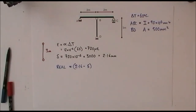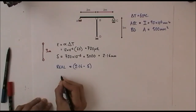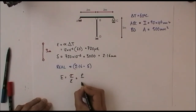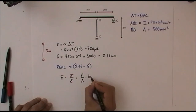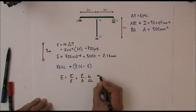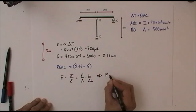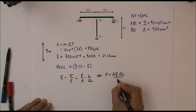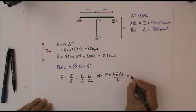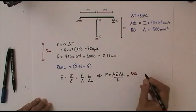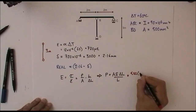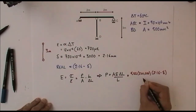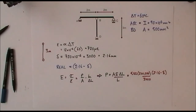To work out the actual value, let's consider this equation: Young's modulus is stress divided by strain, which we can rewrite as P over A times the original length over the change in length. Rearranging, we find that P is equal to the area times Young's modulus times the change in length divided by the length, which for column BD equals 500 millimetres squared times 200,000 times (2.16 minus delta) over 3,000.